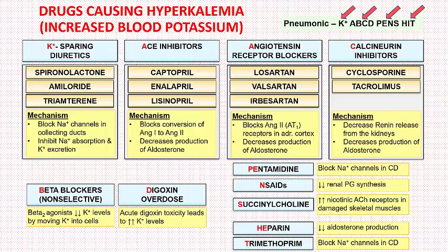To summarize, the mnemonic is potassium ABCD PENS HIT: Potassium = potassium-sparing diuretics; A = ACE inhibitors and angiotensin receptor blockers; B = beta blockers (non-selective); C = calcineurin inhibitors; D = digoxin toxicity; PE = pentamidine; N = NSAIDs; S = succinylcholine; HI = heparin; T = trimethoprim.